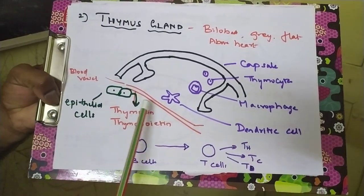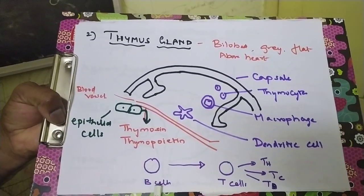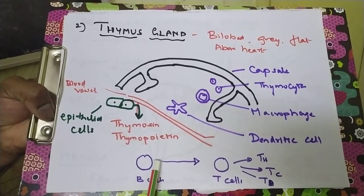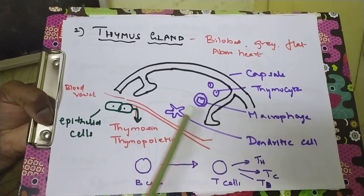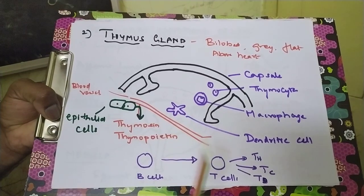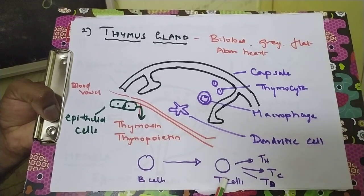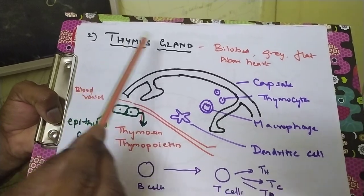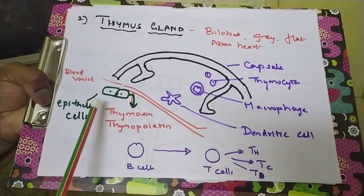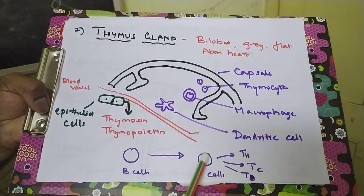The main function of the thymus gland is to convert B cells into T cells. When B cells come into circulation, they enter the thymus gland, which converts them into T cells — thymus-dependent cells. Not all B cells enter the thymus; only those that come in contact with thymus compounds are converted. This conversion is due to the epithelial cells in the thymus gland producing thymocin and thymopoietin, which convert B cells into T cells.